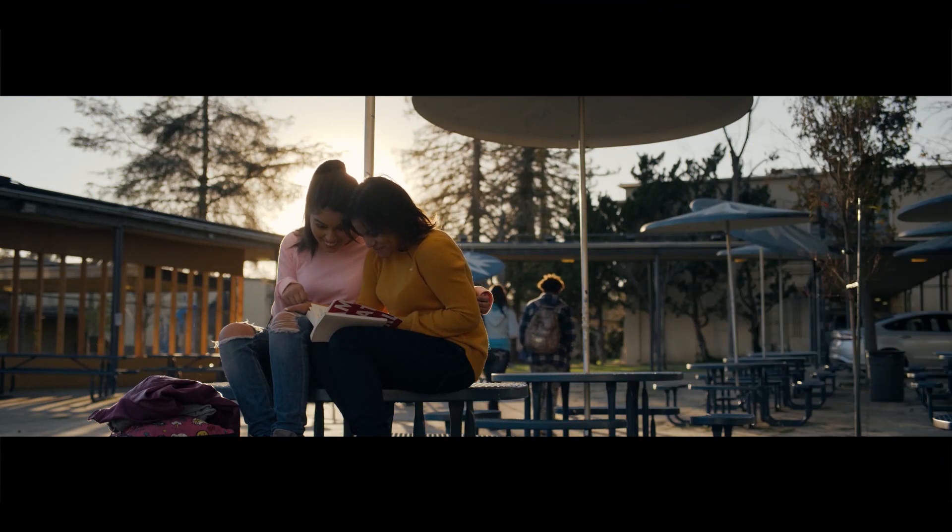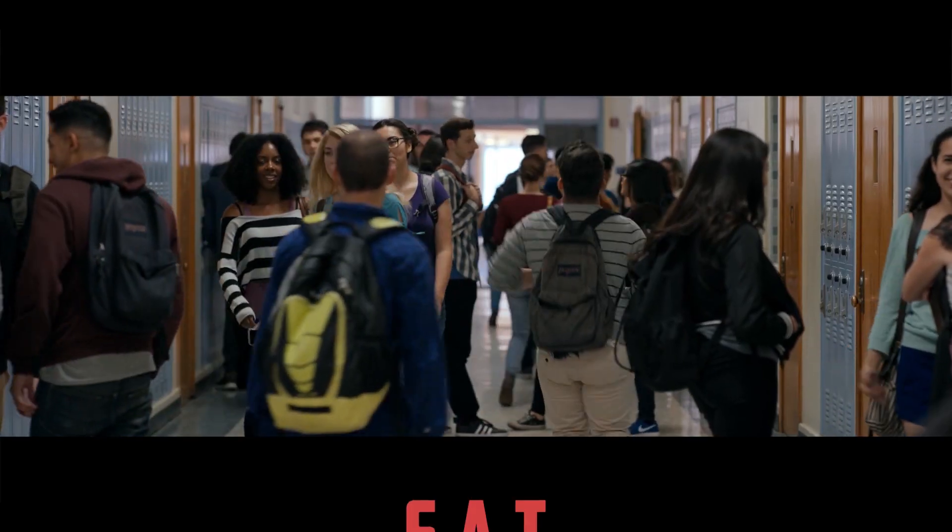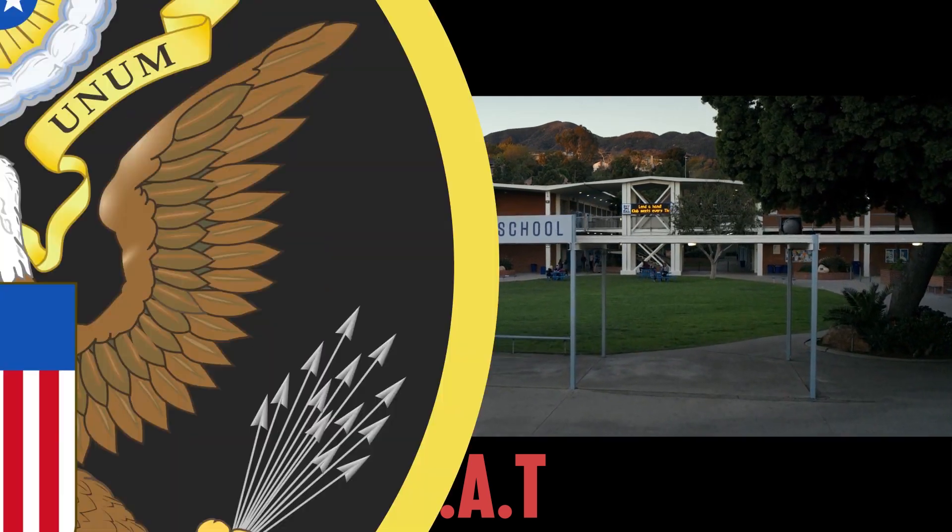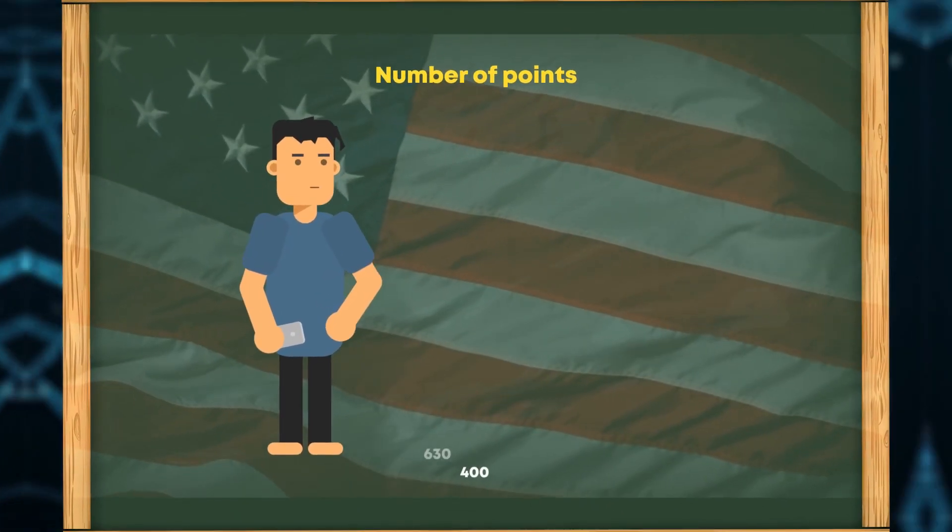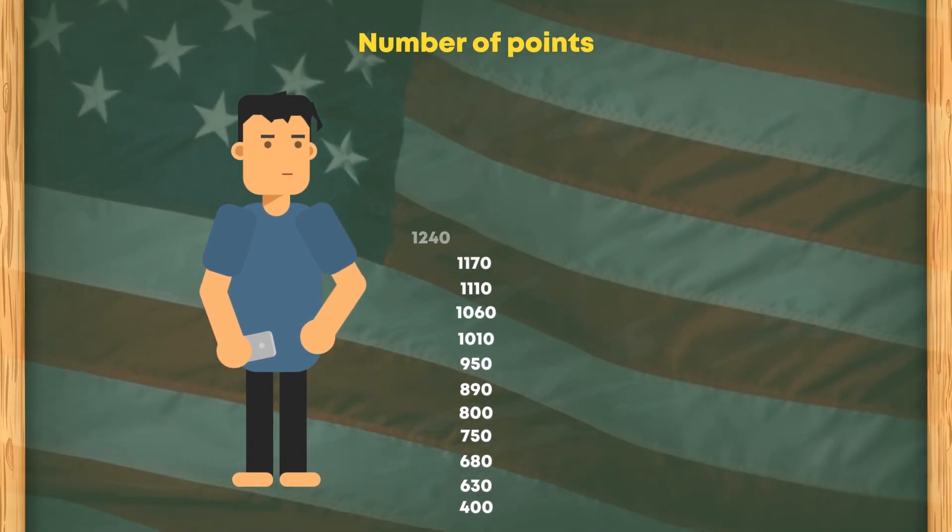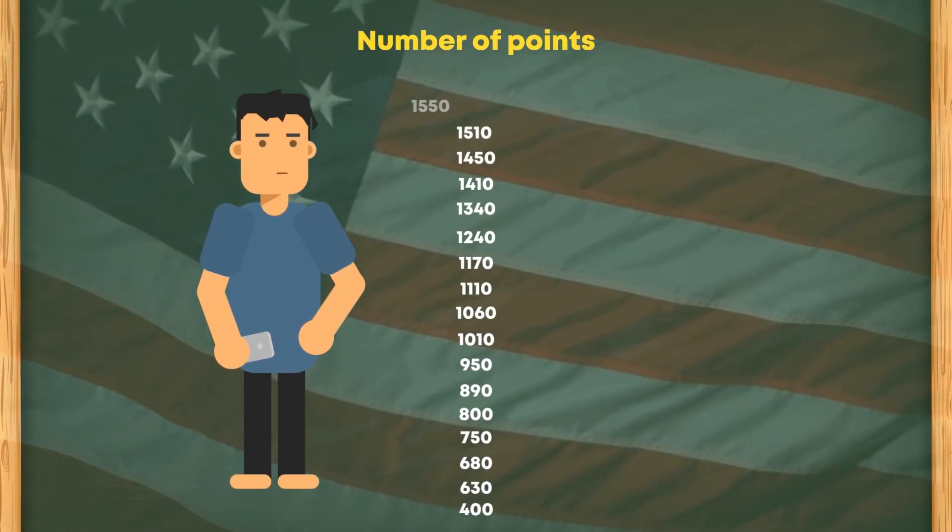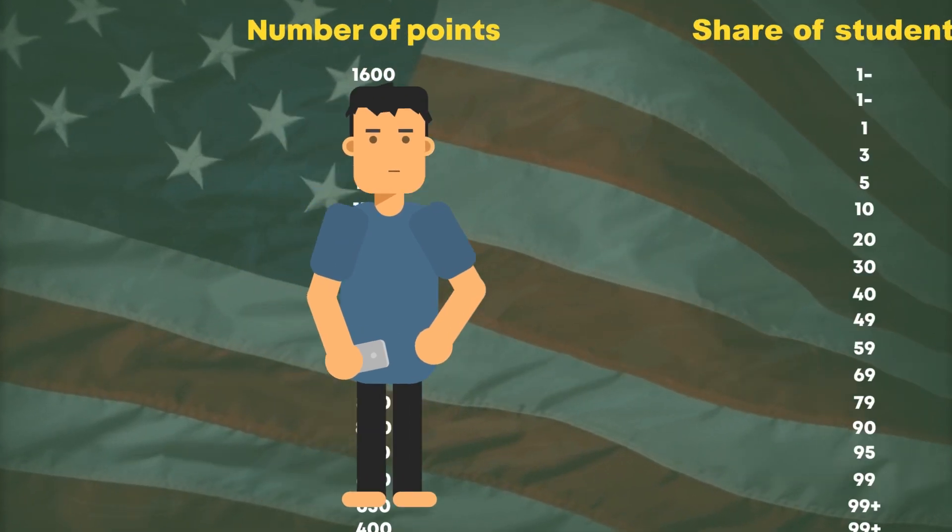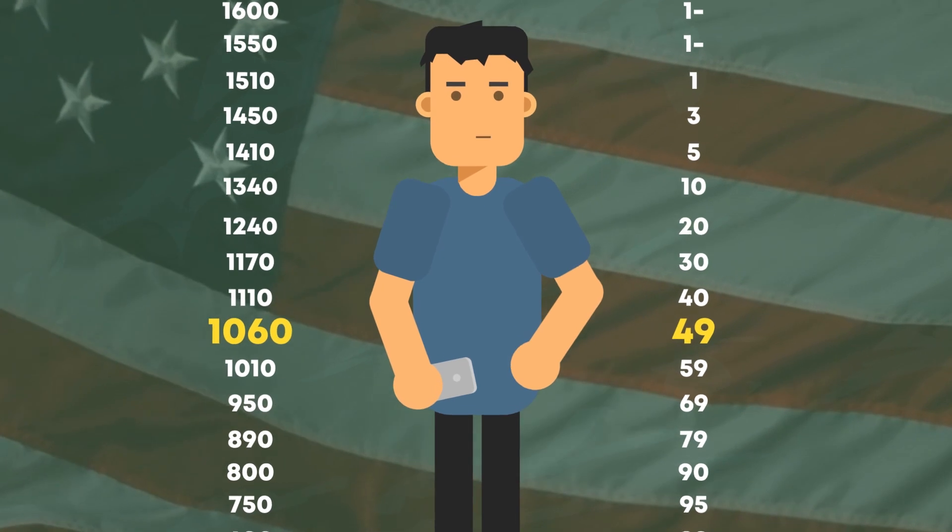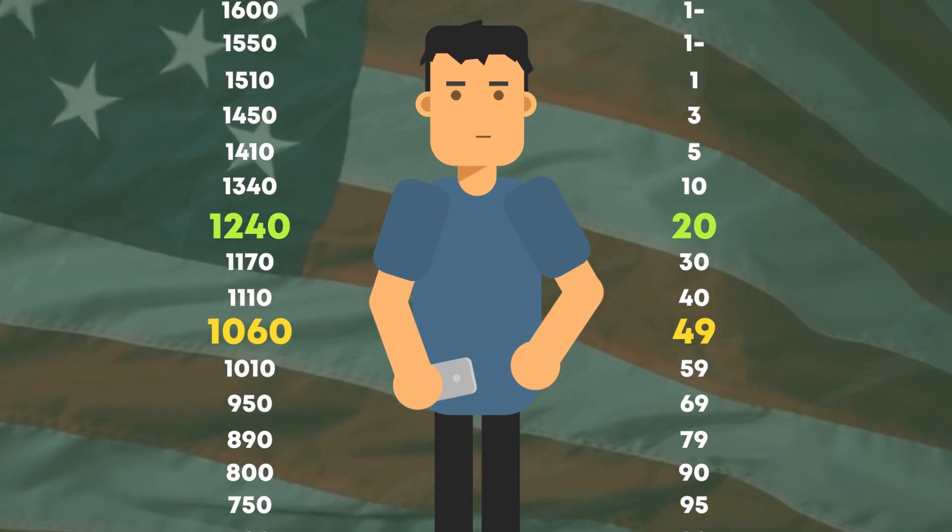For those who don't know, in America, the result of a standardized test, or SAT, acts as a pass to university. In principle, a student can score from 400 to 1,600 points. Obviously, the better the result, the higher your chances to make it. For example, last year, half of the students scored 1,060 points, and only a fifth could get 1,240 points.